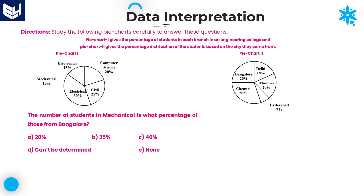First, read the information carefully which is given in the pie chart. Pie chart 1 gives the percentage of students in each branch of engineering college. The first pie chart shows several branches: computer science, civil, electrical, mechanical and electronics. These are the five branches we have.